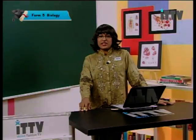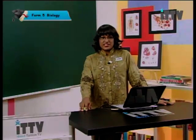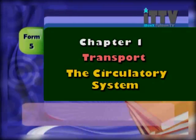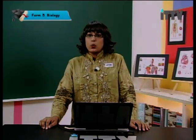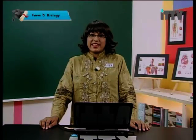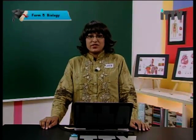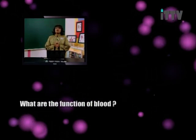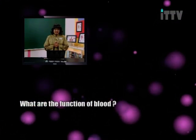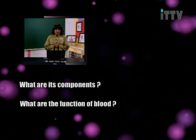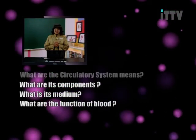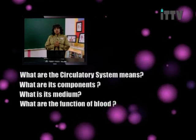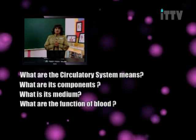In lesson 2 we are going to be discussing and looking deeply into the circulatory system. We are going to see what is a circulatory system, what are the three components that make up the circulatory system in humans and animals, what are the mediums of transport in humans and animals, and to explain the function of blood and haemolymph in transport. By the end of today's lesson you should know and understand what a circulatory system means, its components, its medium, and the functions of blood and haemolymph — a blood-like fluid which functions in insects.